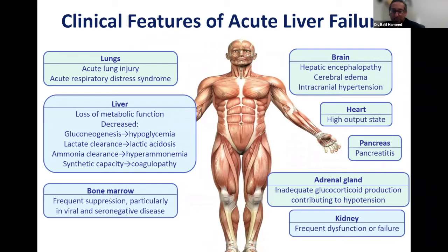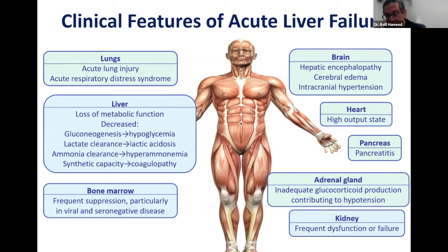Sometimes they have bone marrow suppression, especially with viral hepatitis or other liver disease. In the brain, besides hepatic encephalopathy, one of the biggest concerns is development of intracranial hypertension as manifested by cerebral edema. That is a common cause of death in these patients, and when we manage them, we focus very importantly on making sure they don't develop cerebral edema or intracranial hypertension.